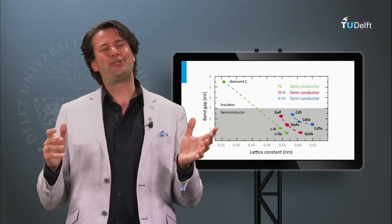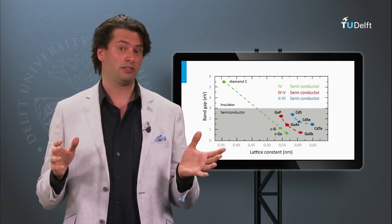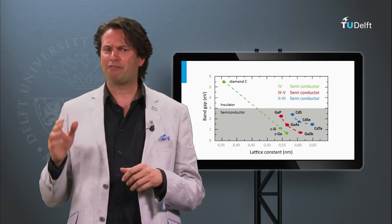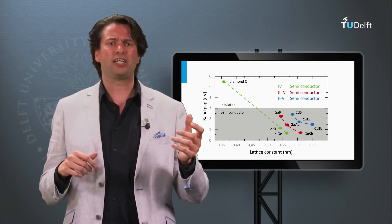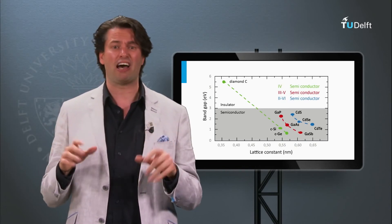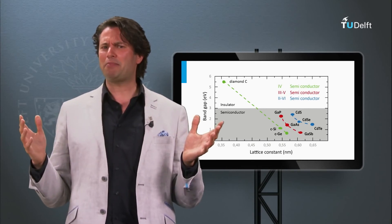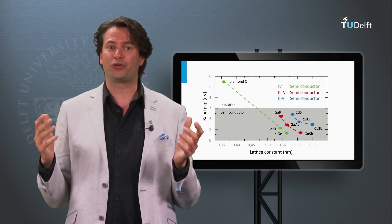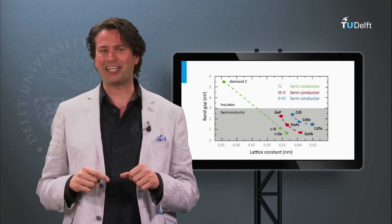I hope you have become familiar with the important properties of semiconductors, like the valence band, the conduction band, and the band gap. I have shown that we have different semiconductor materials like silicon, germanium, gallium arsenide, and cadmium telluride. Important to remember is that all these semiconductors have different band gaps. So, how can we make semiconductor materials conductive? Or in other words, how can we fill the conduction band with free electrons? It's my pleasure to show that in the next block.